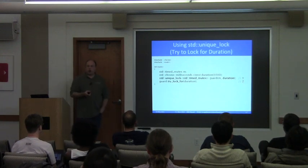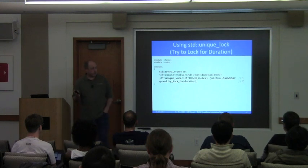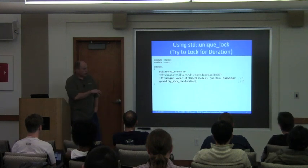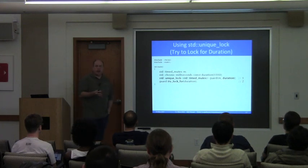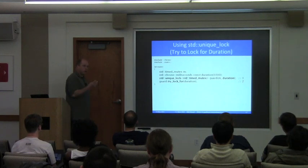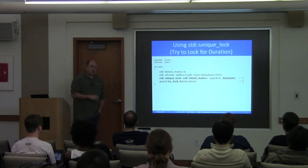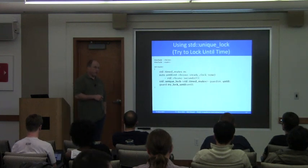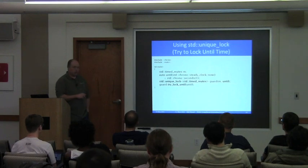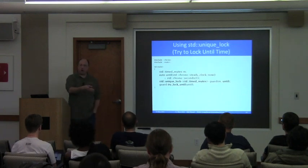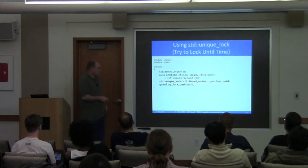You can also control how long it tries. try_lock returns immediately — either it can grab the lock or it can't. You can pass a duration to the constructor; the fact that you're providing a duration is sufficient to tell it we're doing a try_lock_for that duration. That's like constructing with defer_lock and then calling try_lock_for yourself. There's also the 'until' version: pass in a time point and the constructor will try up until that specific time on the clock to acquire the lock. If it succeeds early, it finishes early.